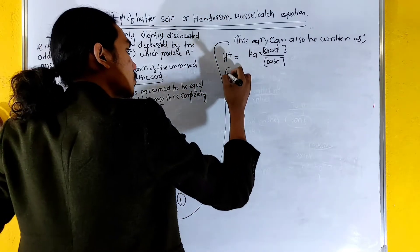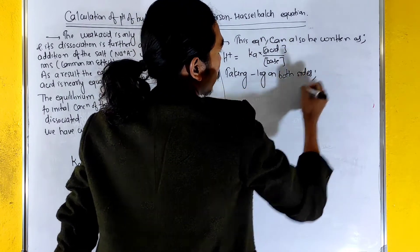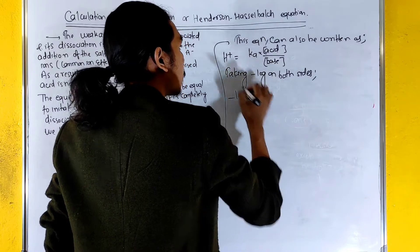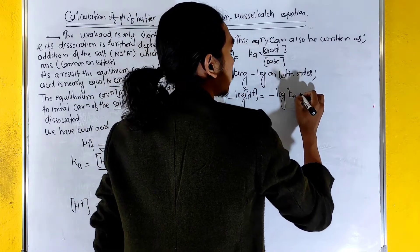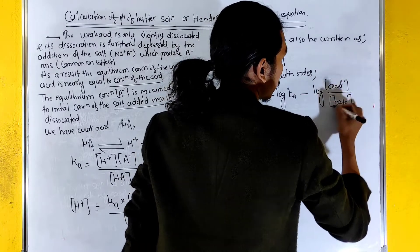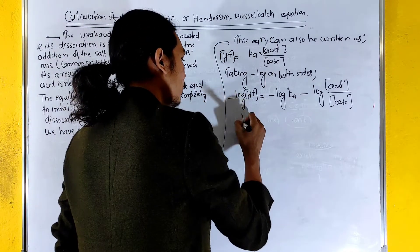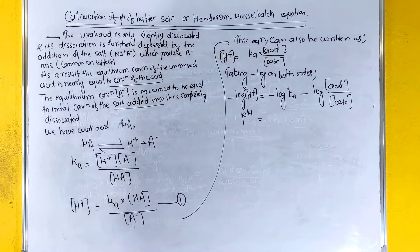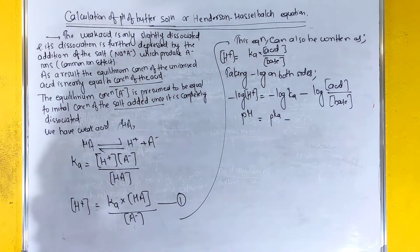Taking the negative logarithm on both sides, we get: negative log of H plus equals negative log of Ka, minus the negative log of acid divided by base. This gives us the equation: pH equals pKa plus log of base divided by acid.